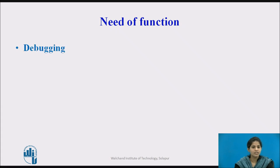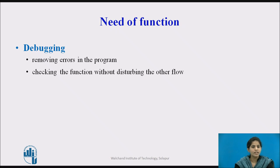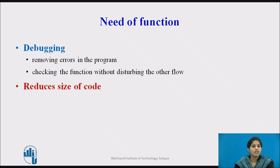Next is debugging. Debugging means removing the errors in a program. When there is an error, the programmer can check the function where the error is flagged and modify that function without disturbing the flow of other functions. Next, functions reduce the size of code — the use of functions reduces the length of the source code.